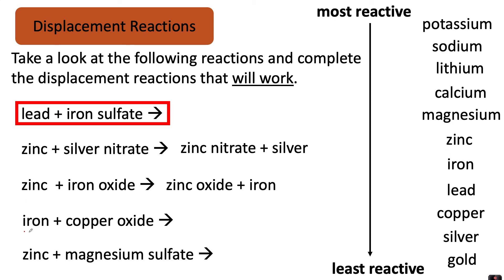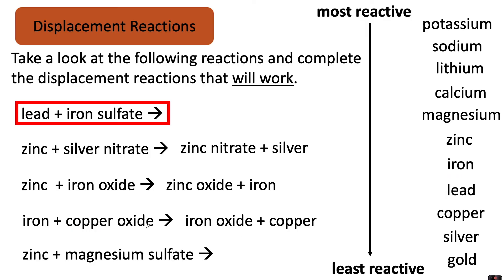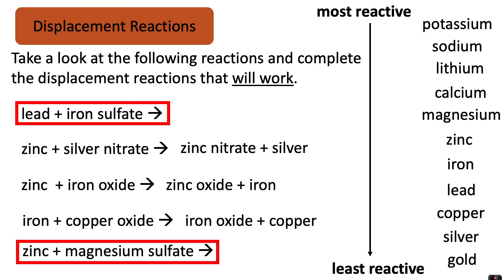In the next one, iron and copper oxide — iron is more reactive than copper, so it will displace the copper from the copper oxide, and the products will be iron oxide plus copper. In the final reaction, zinc and magnesium sulphate — zinc is less reactive than magnesium, so zinc will not be able to displace the magnesium from the magnesium sulphate. Well done if you worked out that this one will not work.